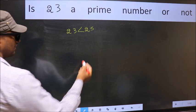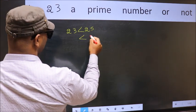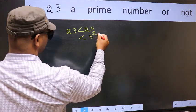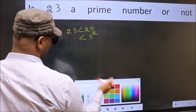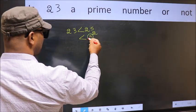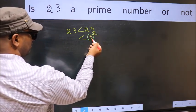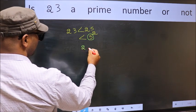Next, 25 is nothing but 5 square. Now you write all the prime numbers less than 5. They are 2 and 3.